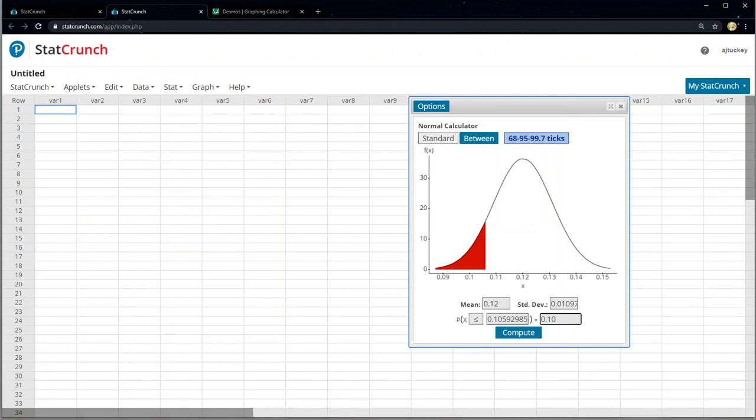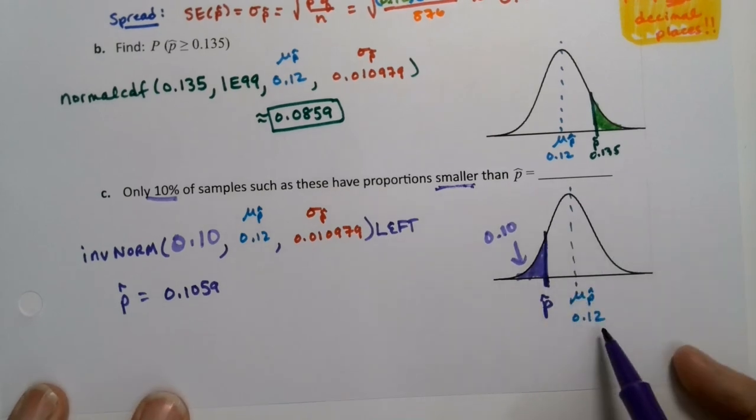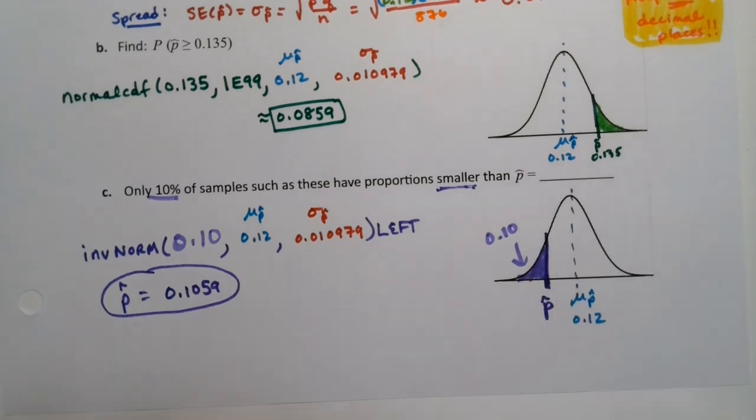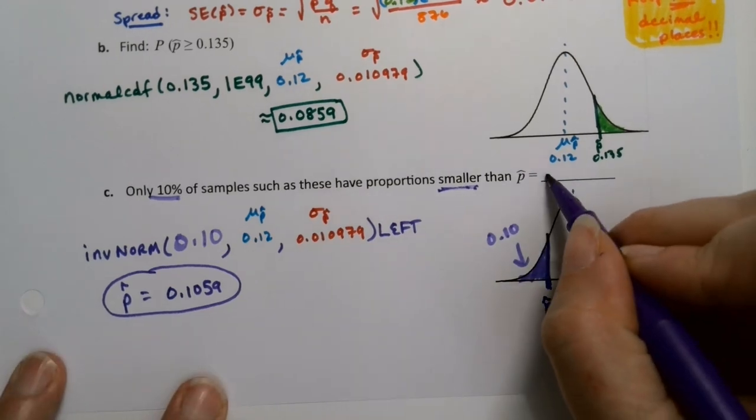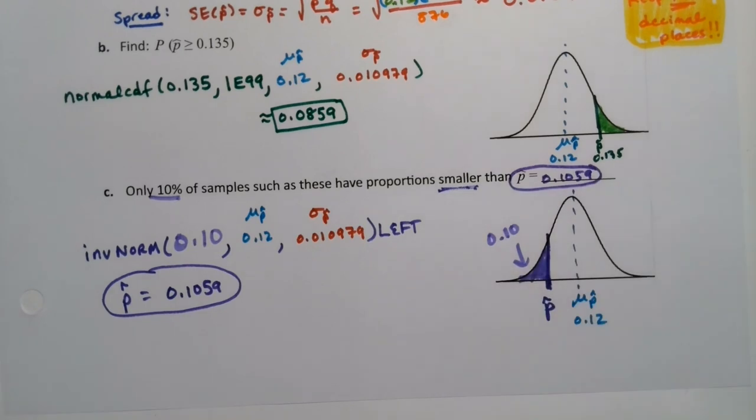And look at the graph—it should make sense. 0.12 is in the center, we're over to the left of that, and that region that's shaded, that red region, is worth 10%, 0.10. And that line where it falls is at 0.1059. So this line is to the left of 0.12, so it makes sense. 0.1059, I'm actually going to leave it there. Well, I can put it up here. I'll just circle it to make it more obvious. Here we go.